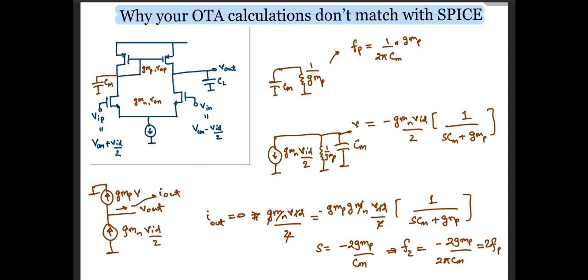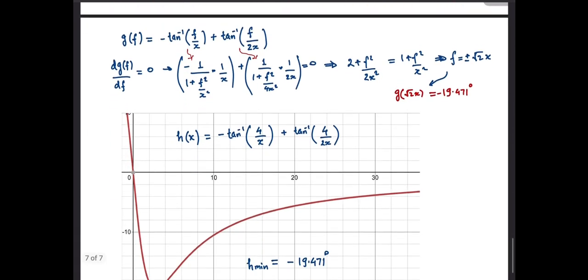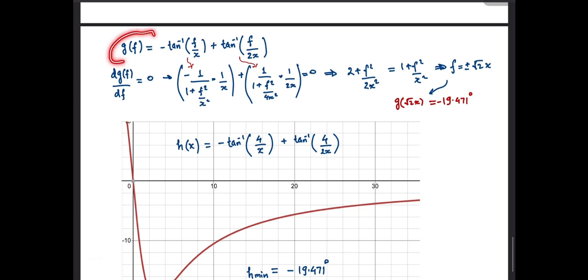The phase degradation due to the pole is minus tan inverse f by fp, whereas the zero adds a phase of tan inverse f by 2 fp. Let's call this function G of f.